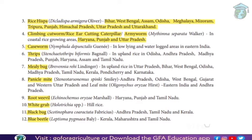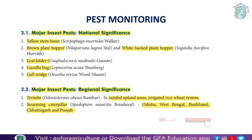Mealy bugs occur in upland rice in Uttar Pradesh, Bihar, West Bengal, Odisha, Madhya Pradesh, Tamil Nadu, Kerala, Pondicherry, and Karnataka. Panicle mite is also regional, found in Andhra Pradesh, Odisha, and West Bengal. Root weevil is found in Haryana, Punjab, and Tamil Nadu, along with white grub in hill rice. Blackbug occurs in Andhra Pradesh, Tamil Nadu, and Kerala. Blue beetle is found in Kerala, Maharashtra, and Tamil Nadu. These are the major insect pests of national and regional significance.